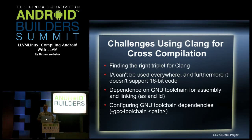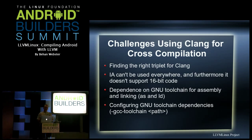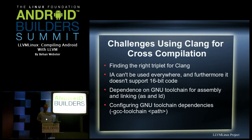LLVM includes an integrated assembler (IA), which means assembly is extremely fast — you're not forking off a different process and sending assembly code back and forth. The problem is that IA and the GNU assembler are slightly different; they take slightly different inline assembly code in C. As a result, at least for the Linux kernel, we couldn't use IA — there's a lot of inline assembly in the kernel that doesn't work with it, so we have to turn it off. Additionally, the x86 boot code is 16-bit, and IA is a 32-bit only assembler, which causes problems.